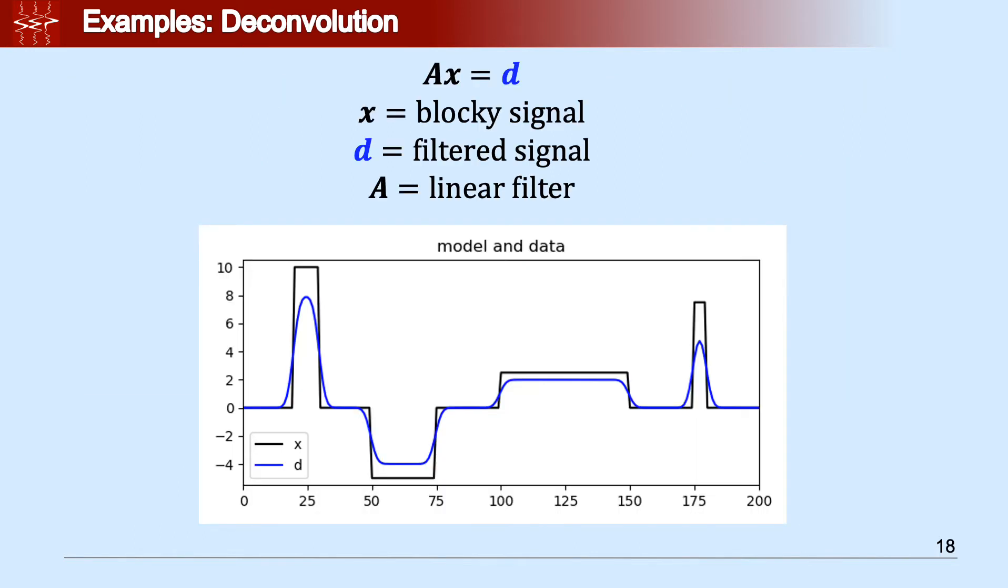In the second application of the L1 or sparsity-promoting solvers, we're going to try some deconvolution or blocky deconvolution. In this case, we're going to take the blocky signal X and try to retrieve it out of the filtered signal D. We applied some kind of Gaussian filter to the blocky signal and we obtained some data.